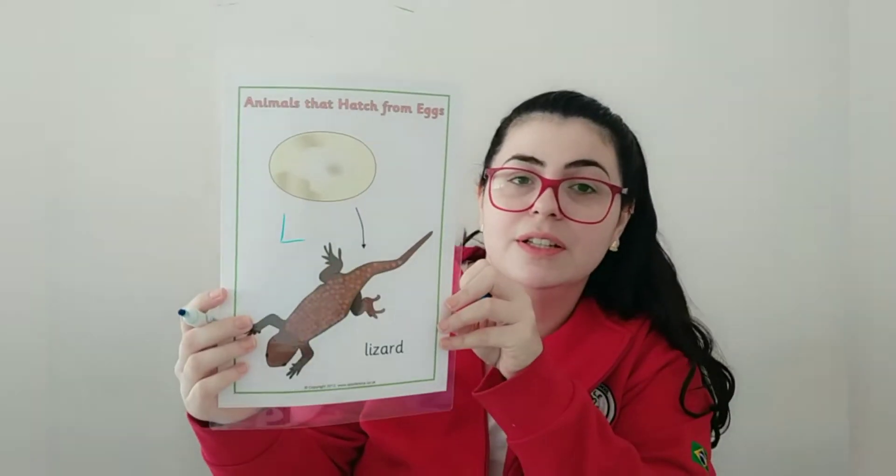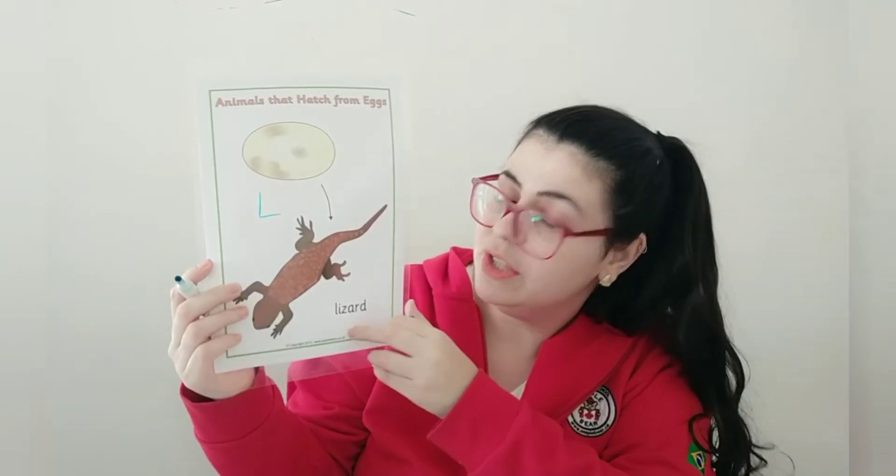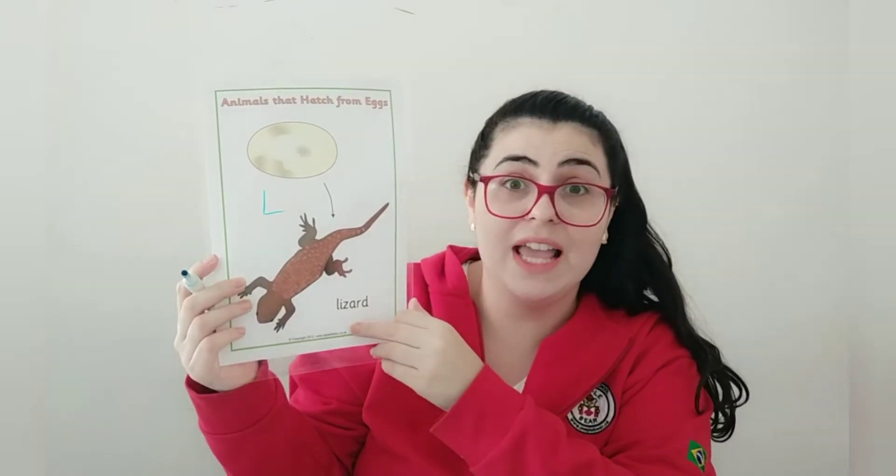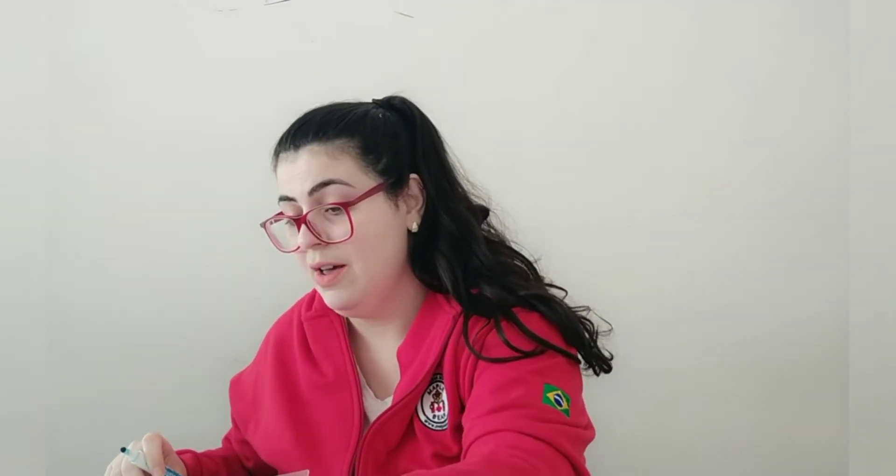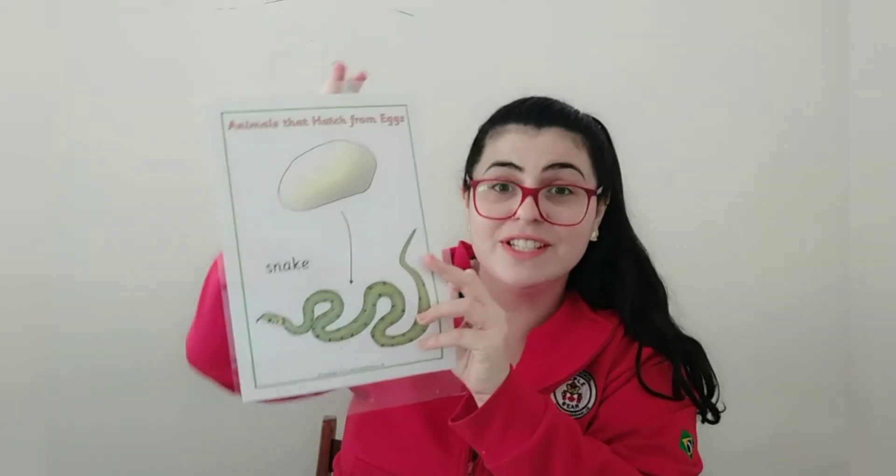And you're gonna show me in our class on Thursday, right? If your name starts with letter L, you can draw a lizard. S is for spider, and it's also for snake.